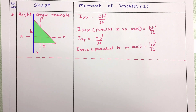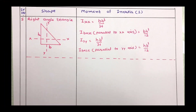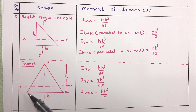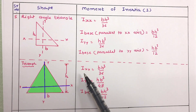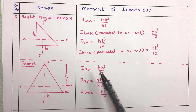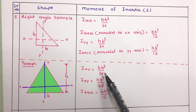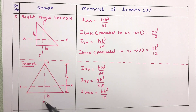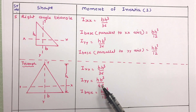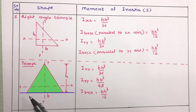For a general triangle with base b and altitude h, with centroidal axes xx and yy: the moment of inertia about the xx axis is I_xx = bh³/36, and about the yy axis is I_yy = hb³/48. The moment of inertia about the base is bh³/12.